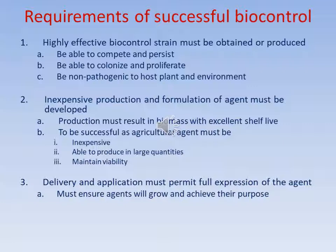Requirements of a successful biocontrol agent: a highly effective biocontrol strain must be obtained or produced. It should be able to compete and persist, colonize and proliferate, and be non-pathogenic to the host plant and environment. Inexpensive production and formulation must be developed, and production must result in biomass with excellent shelf life. To succeed as an agricultural agent, it should be inexpensive, producible in large quantities, maintain viability, and delivery must permit full expression — ensuring the agent grows and achieves its purpose of controlling the crop pest.